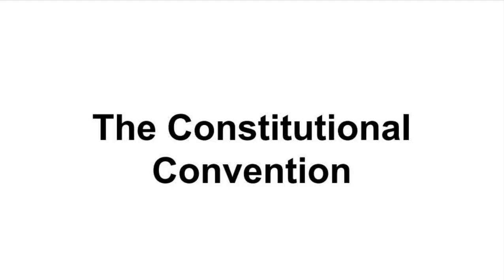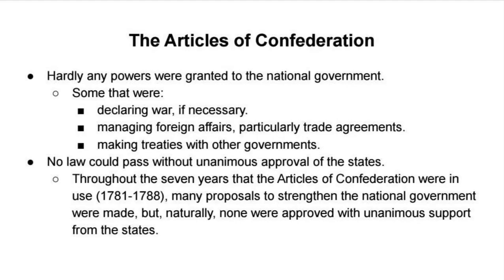After learning about the British American colonies and the Revolutionary Period, we have to study how the United States came to take the form that we know of today. We have the Constitution of the United States, but what many people don't realize is that this was actually a replacement for the original form of government that was much less functional. The Articles of Confederation were the form of government that the United States undertook after the end of hostilities in the Revolutionary War.